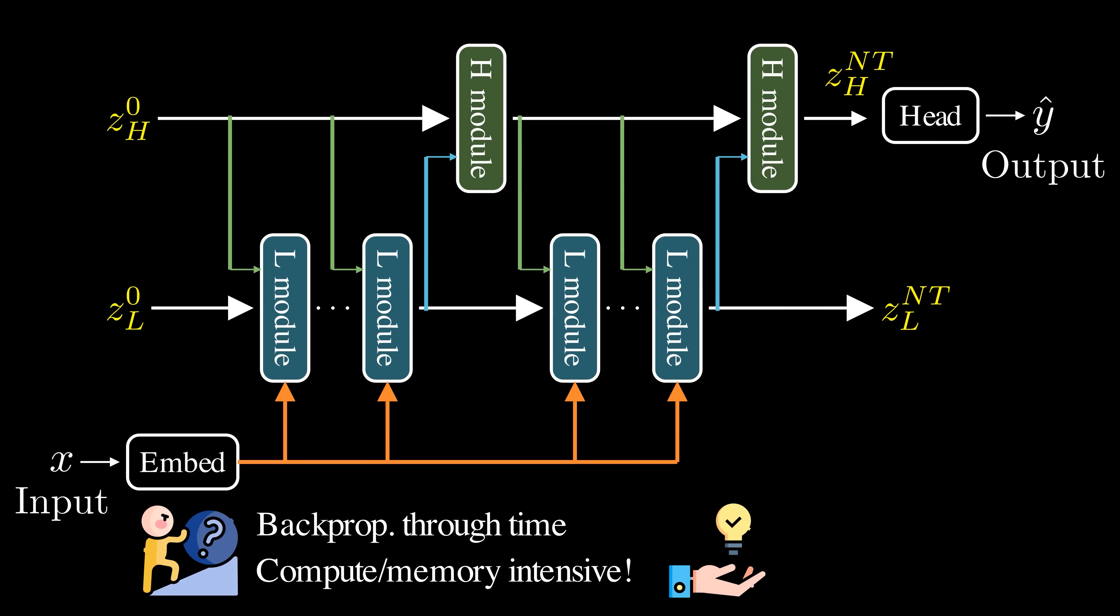However, once the hidden states of both high-level and low-level modules have converged to a fixed point, we only need to back-propagate a single time step at the end, rather than through every intermediate step. This greatly reduces memory usage, since it avoids the need for unrolled computation through time.